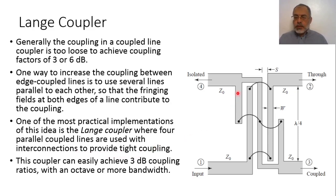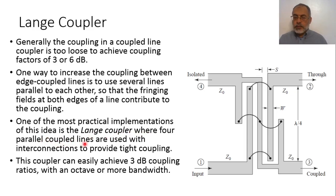In this case, we have this coupled line configuration, this is another coupled line configuration, this is a third coupled line configuration, and finally this is the fourth coupled line configuration. So the Lange coupler is composed of four parallel coupled lines used with interconnections. These are the interconnections.